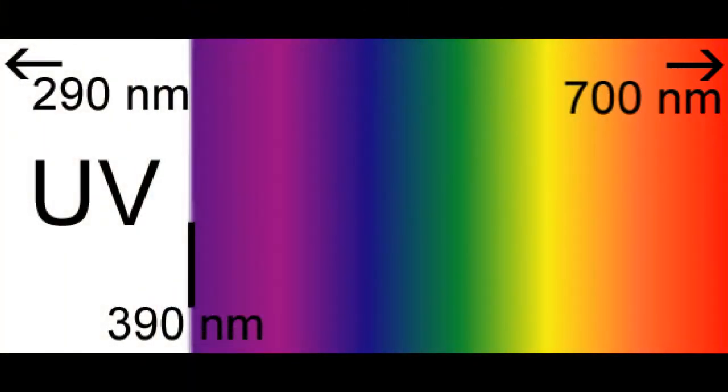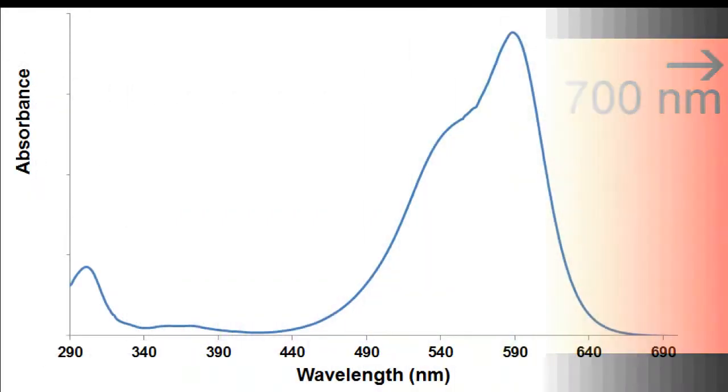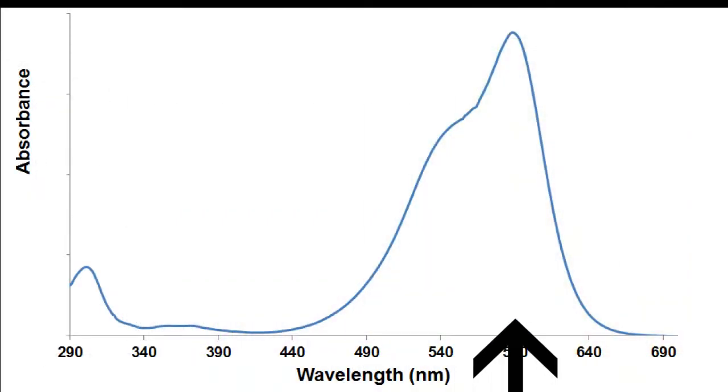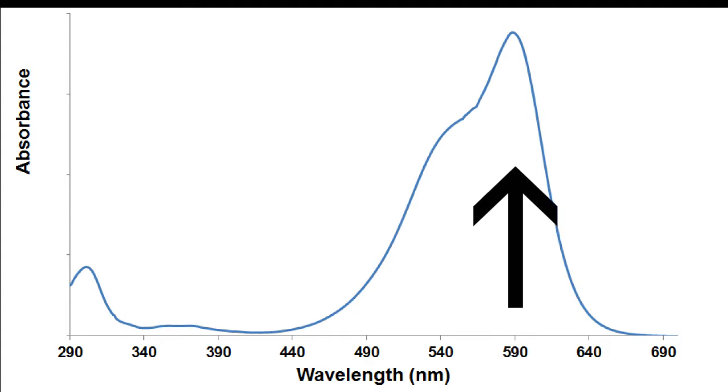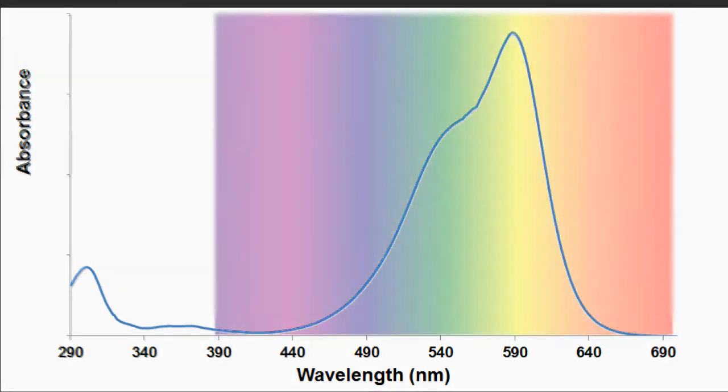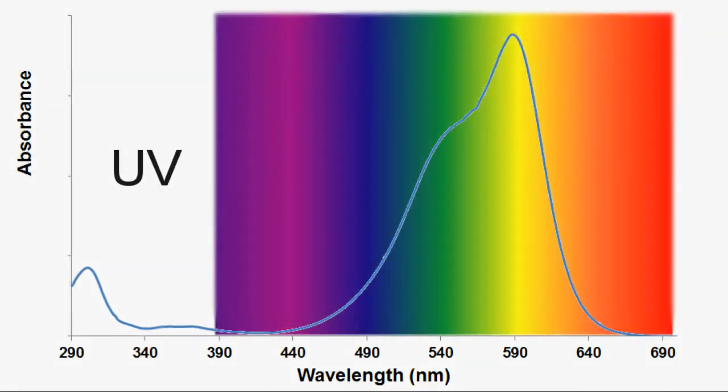We can graph the data the spectrophotometer produced. It appears that our solution absorbs light at a wavelength of 590 nanometers. If we overlay the visible spectrum onto our graph, it looks like the solution is absorbing light in the yellow range. If it's absorbing light in the yellow range, why is our solution violet?